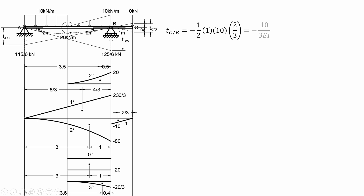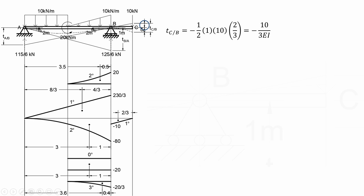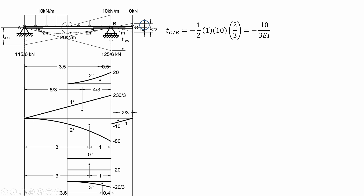Solving for TCB. To check if the assumption of the elastic curve for this portion is correct, this value should not exceed the value of TCB. Otherwise, the elastic curve will look different. To determine that value, we will just apply ratio and proportion. The resulting value is less than TCB, so it means our assumption is correct.